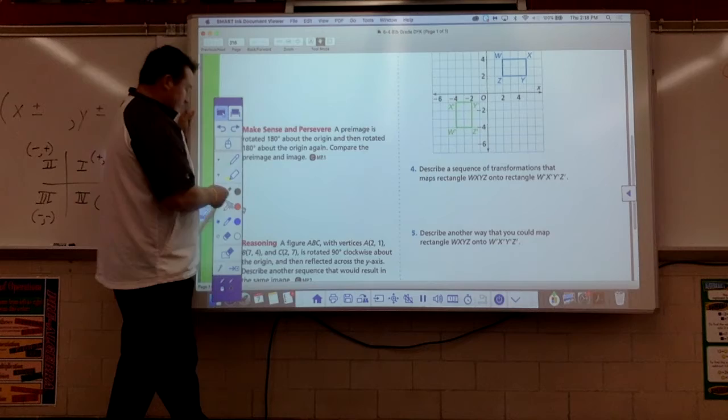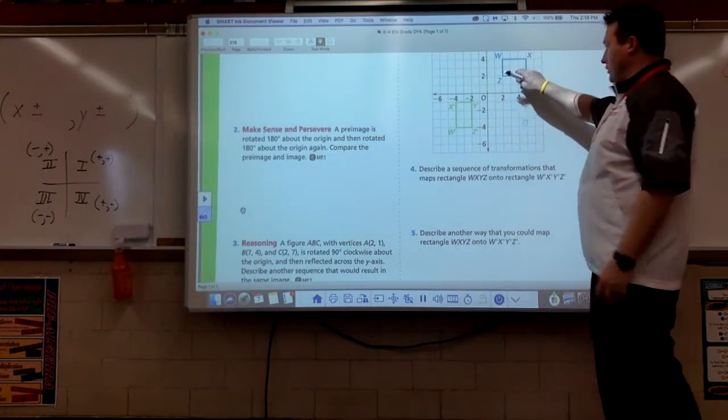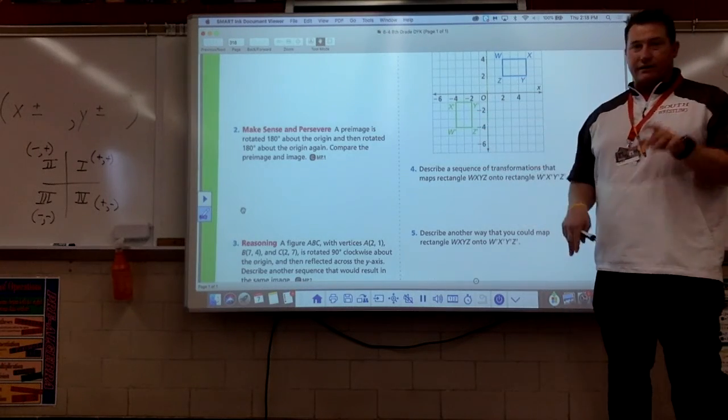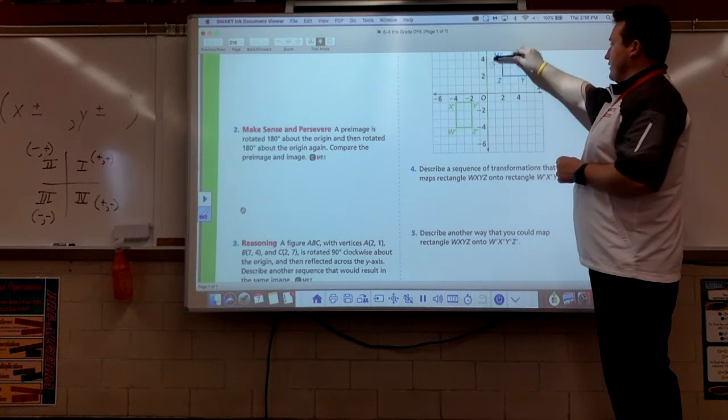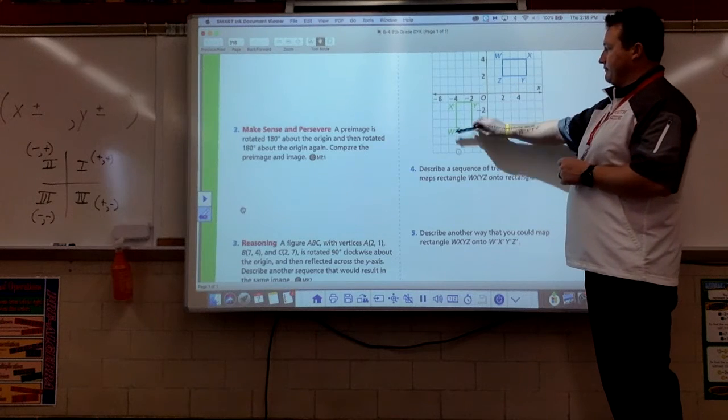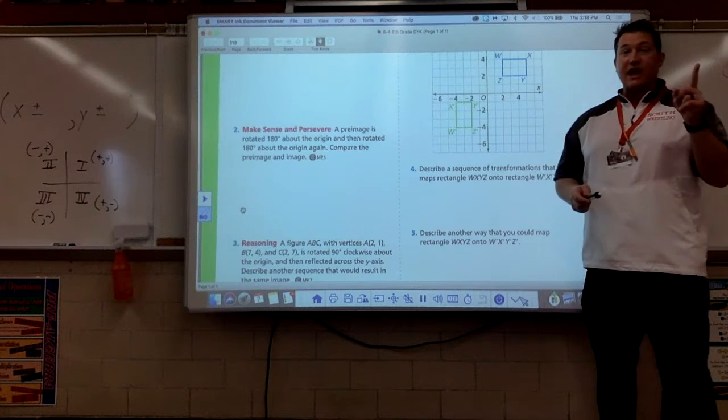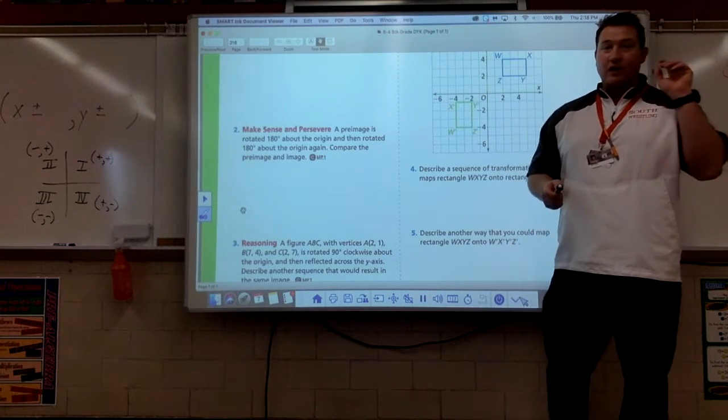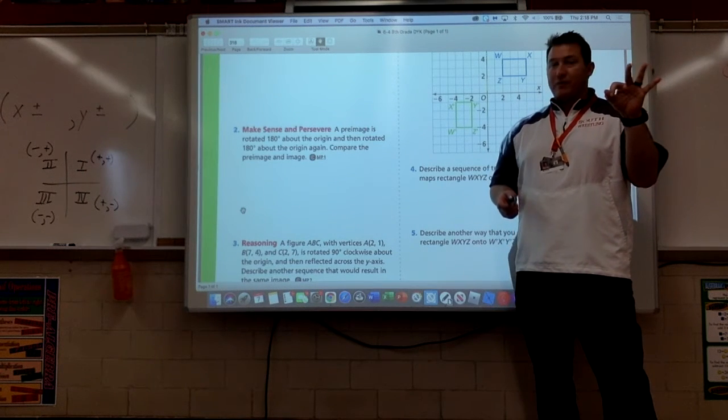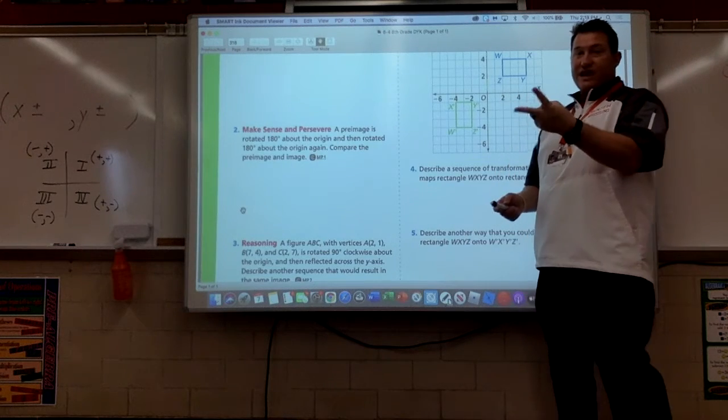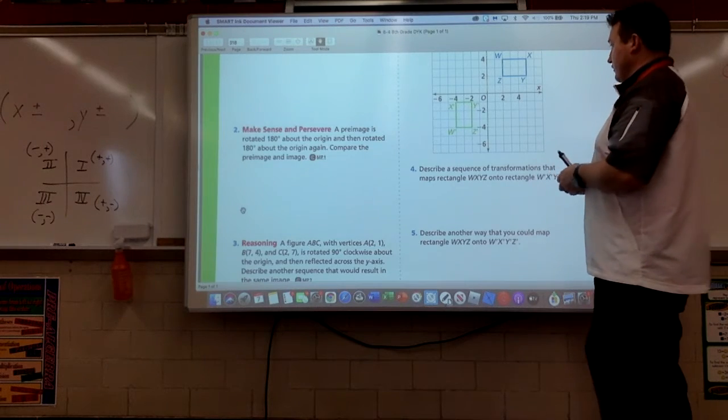Use the diagram. Describe a sequence that maps rectangle blue onto rectangle green. Check for orientation. W, X, Y, Z. Right, alphabetical order. W, X, Y, Z. Same orientation, so that right now we started off having three transformations we could have used. But now the orientation is the same, so now we're just down to two.